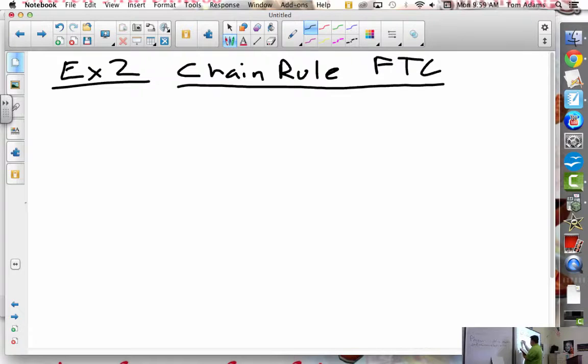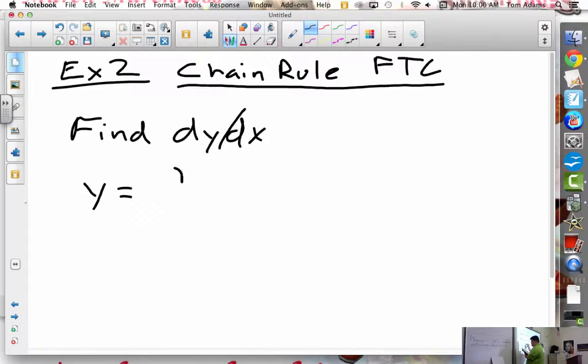So what they want us to do is they want us to find dy/dx of y equals the integral from 1 to x squared of cosine of t dt. Now, what makes this problem different and interesting is that we're going to have to apply the chain rule to this.